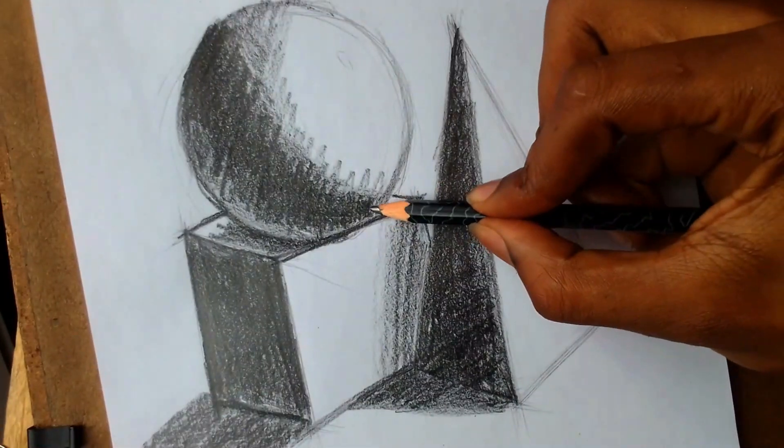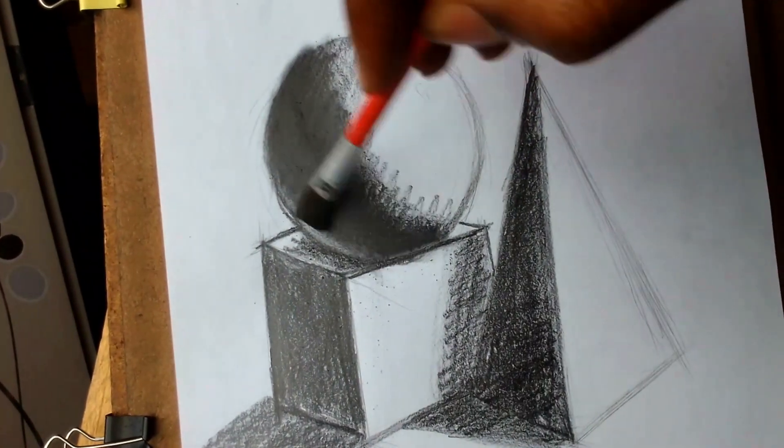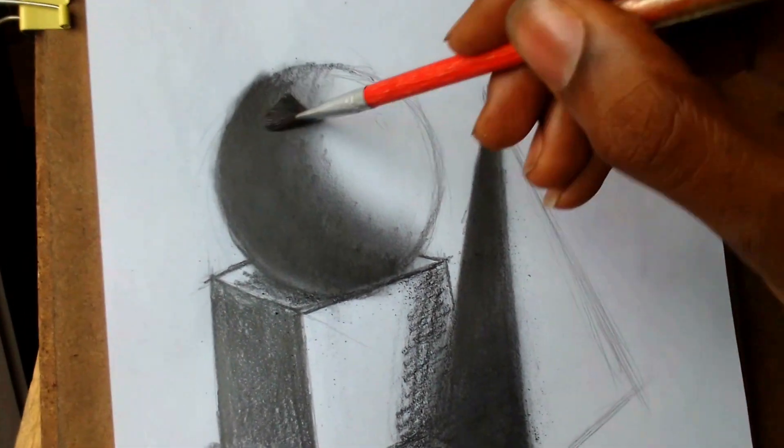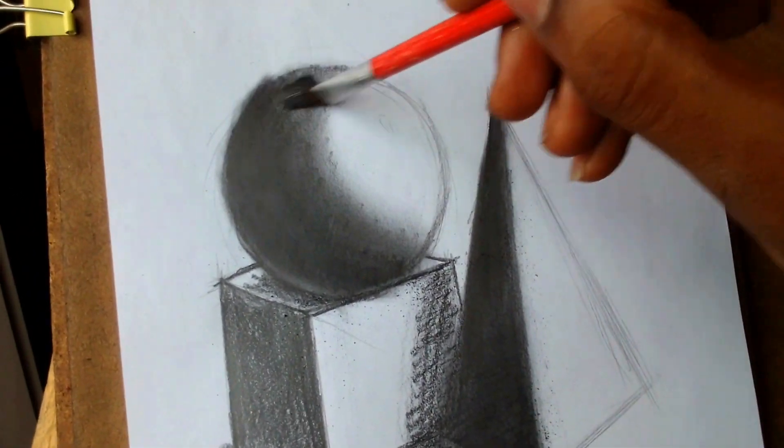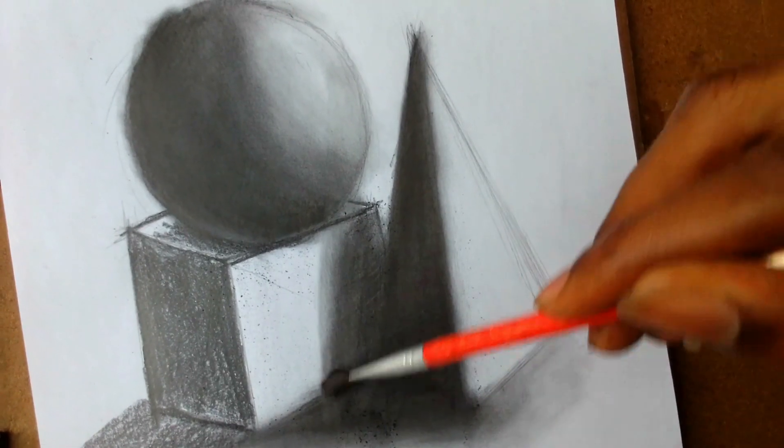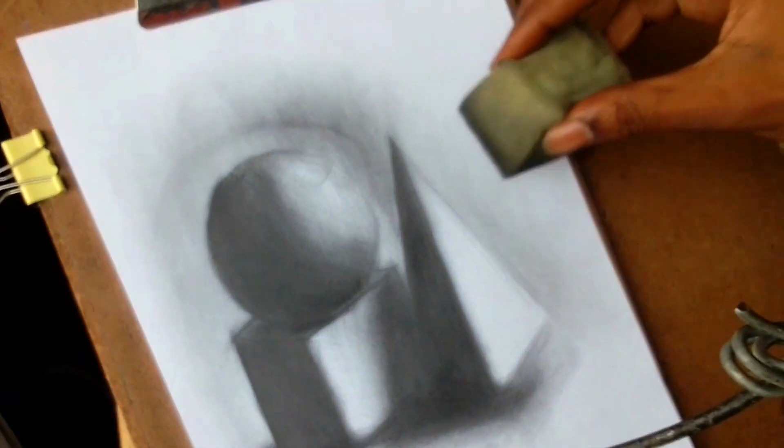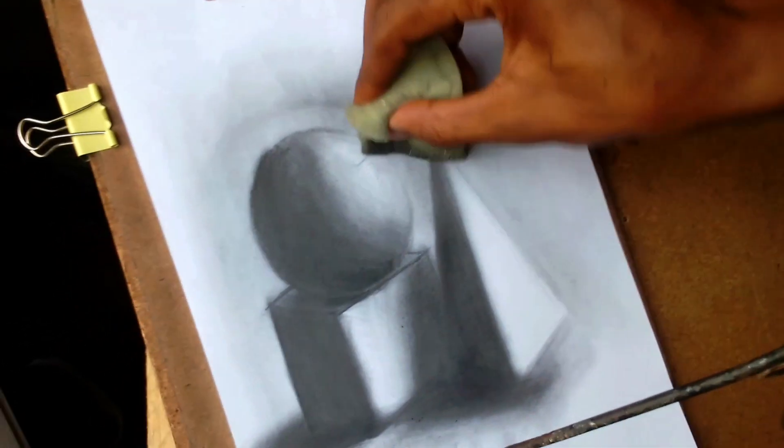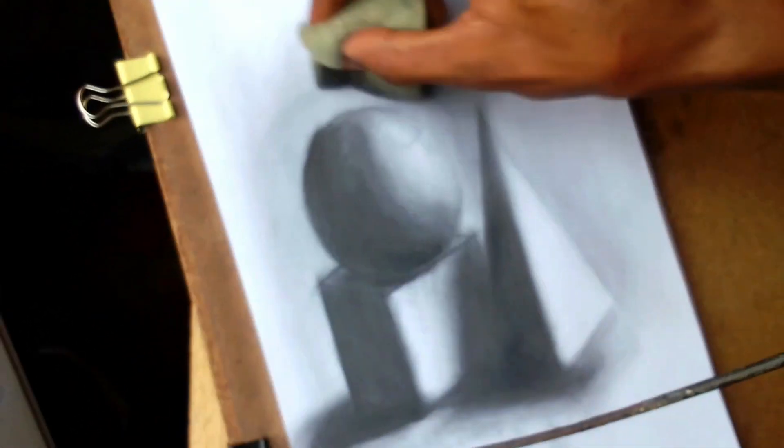And then after I shade in those dark parts, I go in with the brush and smooth everything out. Obviously, keeping in mind that I don't have to smooth where the highlights are going to be that much. I also made sure I added some darkness in the background too, so that the highlights in these objects can pop up.